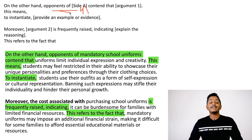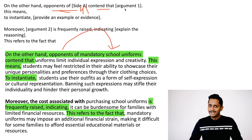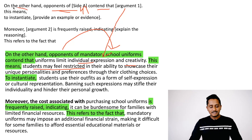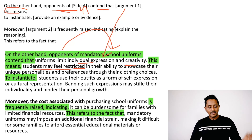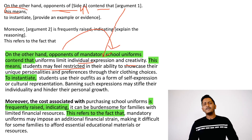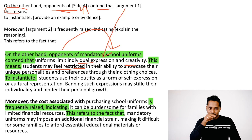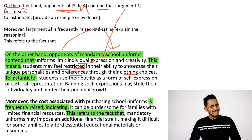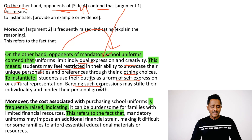'On the other hand, opponents of mandatory school uniforms contend that uniforms limit individual expression and creativity.' Write in a simple sentence. 'This means students may feel restricted in their ability to showcase their unique personalities and preferences through their clothing choices.' Then the example: 'Students use their outfits as a form of self-expression or cultural representation — banning such expressions through mandatory school uniforms can stifle their individuality and hinder their personal growth.'